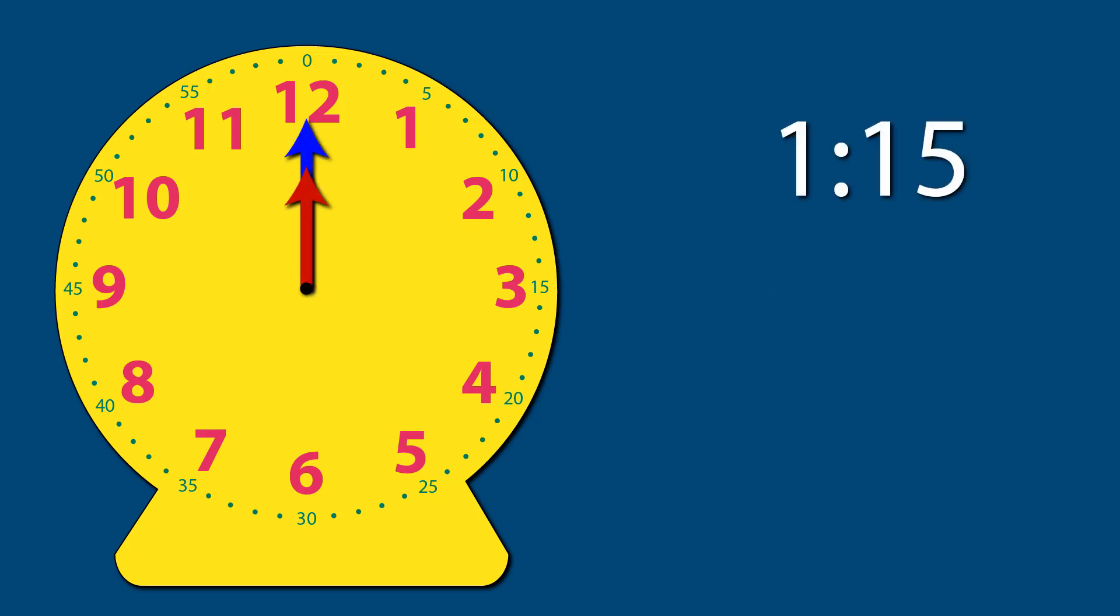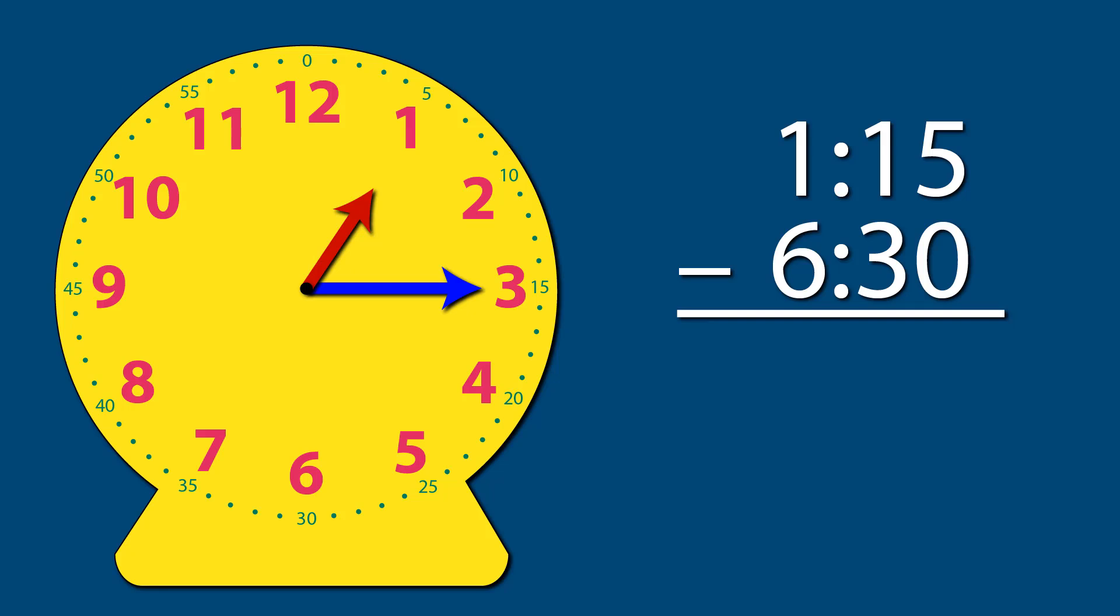Now let's subtract time. Let's subtract 6 hours and 30 minutes from 1:15. Start by showing 1:15. The hour hand should be just past the 1, and the minute hand should be on the 3.